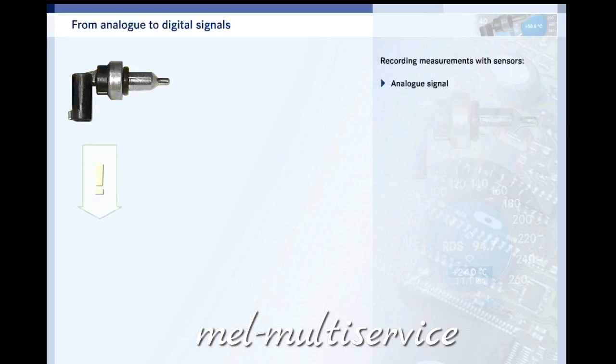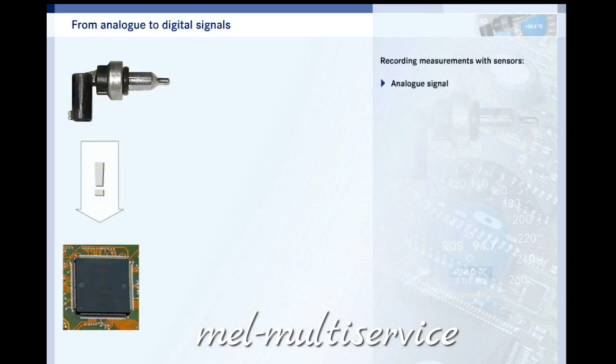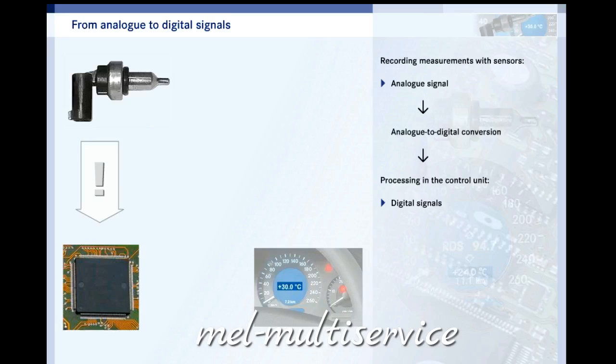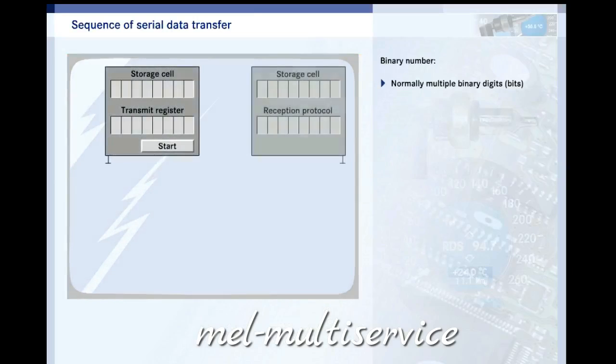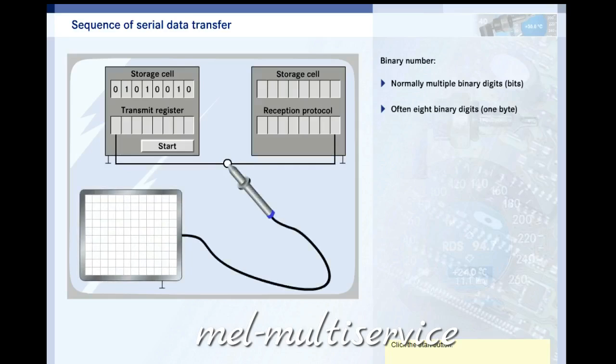Now you know that an analog signal can be converted into a multi-digit binary number. But how can this binary number be processed? This section shows how binary signals are transmitted serially, in other words, one digit at a time. In order to be sufficiently accurate, binary numbers normally consist of a number of binary digits known as bits. Often groups of eight bits are used. These are called bytes. Click the button to start the transfer. It is shown here in a simplified format.